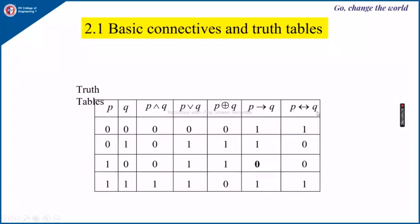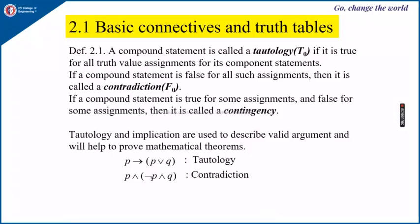Next, P if and only if Q is just the complement of P XOR Q, which implies both P and Q must be either both false or both true for P if and only if Q to be true. A compound statement is called a tautology, represented by T0, if it is true for all truth value assignments for its component statements. And if a compound statement is false for all such assignments, then it is called a contradiction, represented by F0.